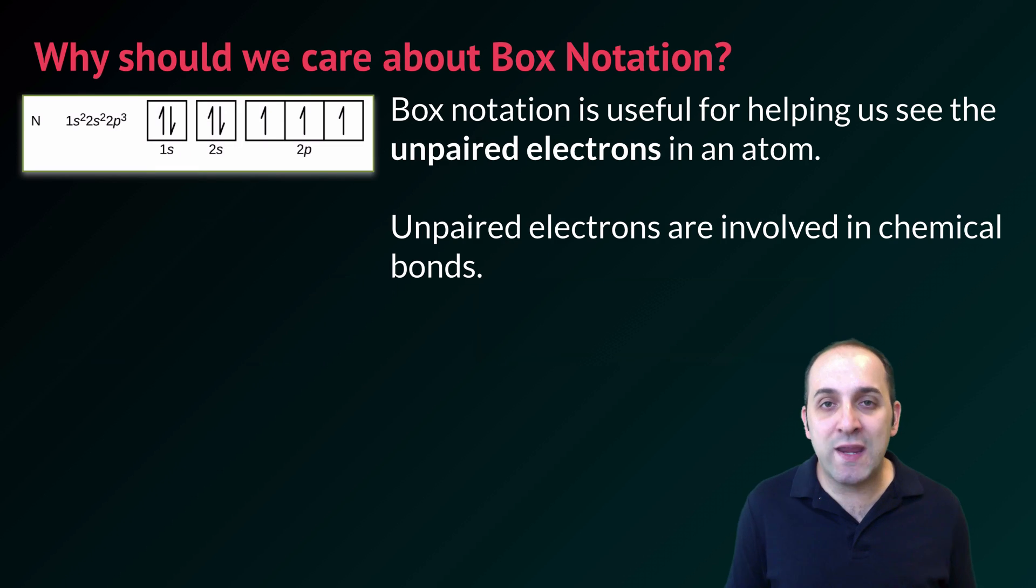So a good question is, why do we care about box notation? And box notation turns out to be really useful for helping us see the unpaired electrons in an atom. For instance, nitrogen has three unpaired electrons. Unpaired electrons are typically the electrons that are involved in chemical bonds. So nitrogen, for instance, can form up to three chemical bonds with other atoms in order to exchange electrons to fill their valence. We'll talk a lot more about that in our next unit.